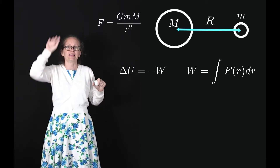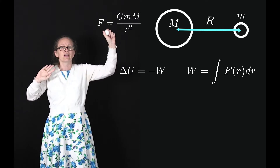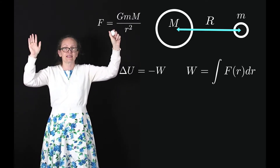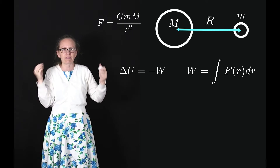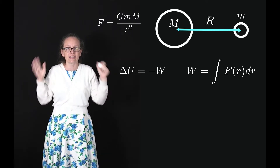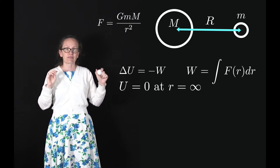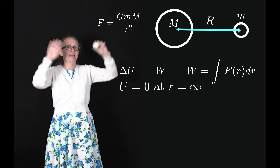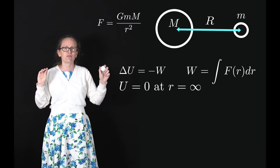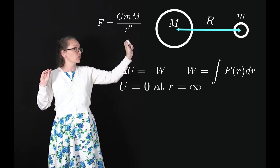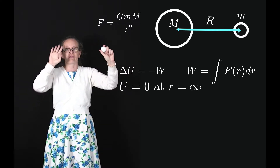Let's now consider a large mass — say a planet with mass capital M — and a smaller mass, say a satellite with mass little m, which is a distance capital R away from that planet. To calculate the gravitational potential energy we need to choose a zero point. By convention, we take the gravitational potential energy to be zero when there is an infinite distance between the two masses. So we consider moving the object from an infinite distance away to the distance R from mass M.